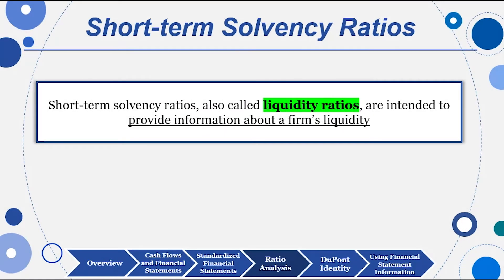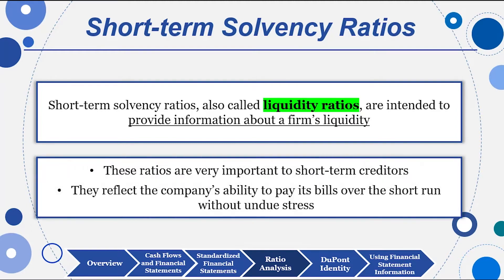Short-term solvency ratios look at liquidity — they provide information on how liquid a company is. Is Apple liquid? I think so. If you look at their balance sheet, they have something on the order of 200-plus billion dollars in cash and short-term investments, and those can be turned quickly into cash. So you can say that Apple is very, very liquid given that fact.